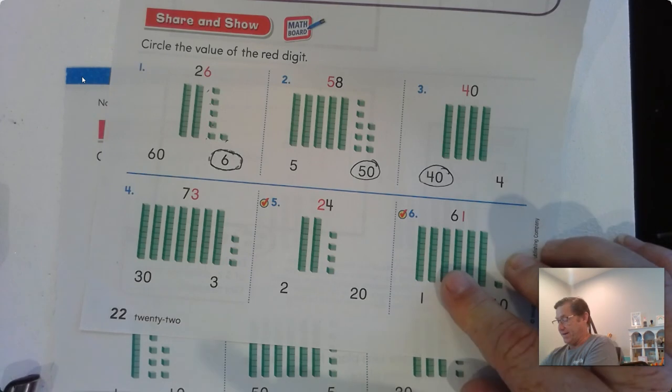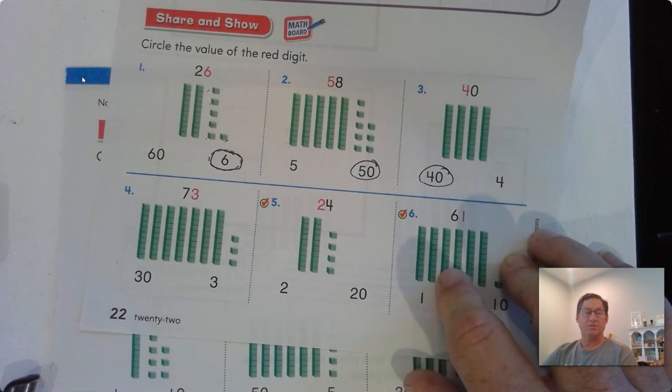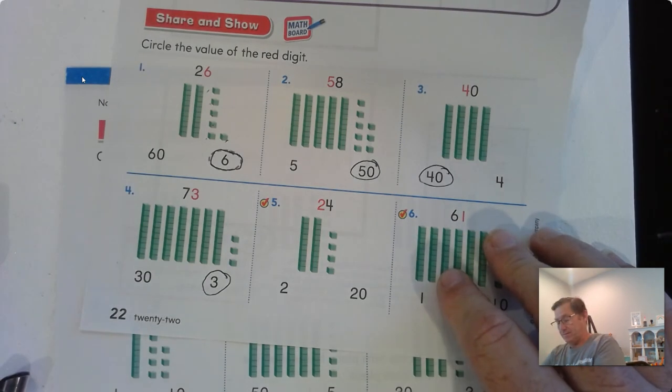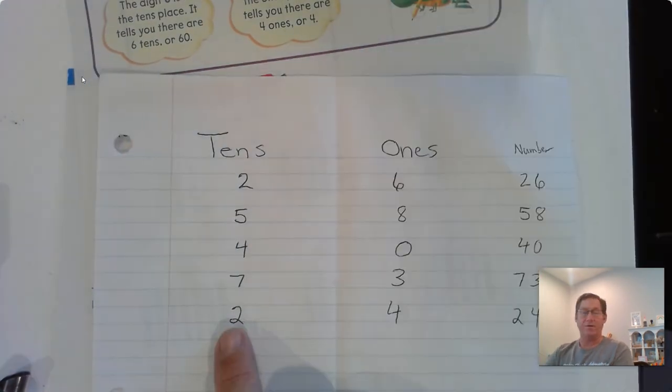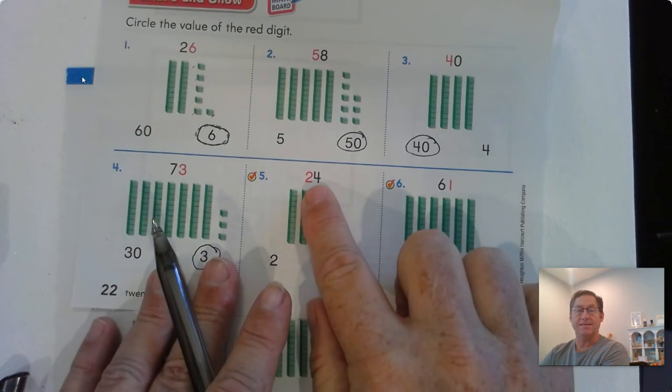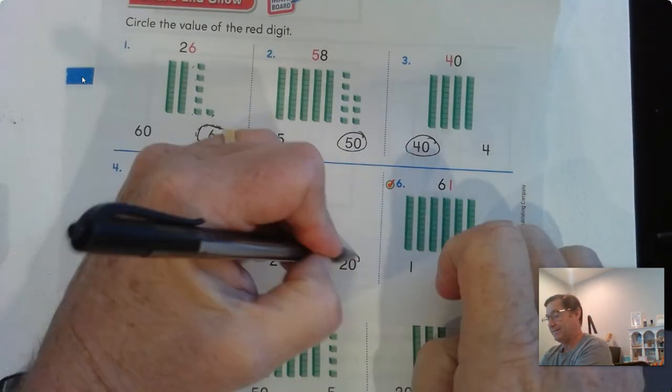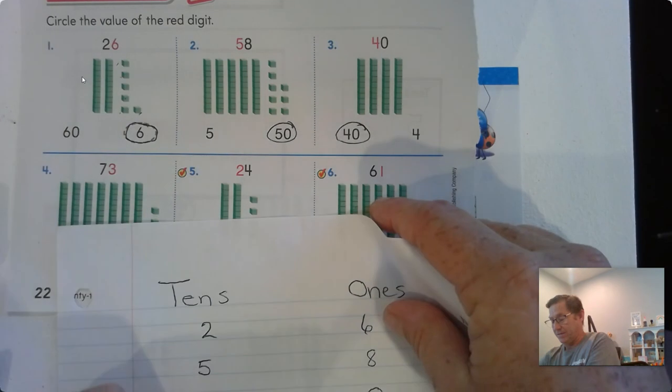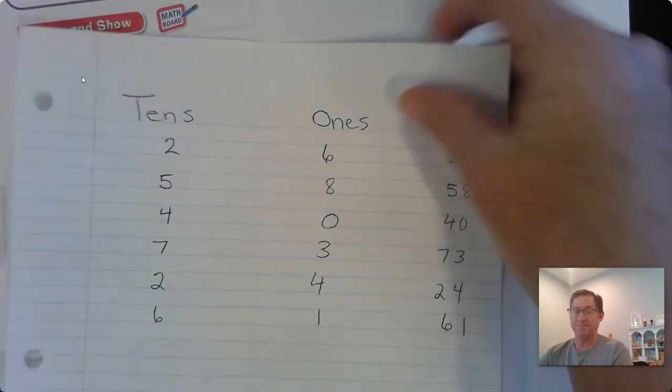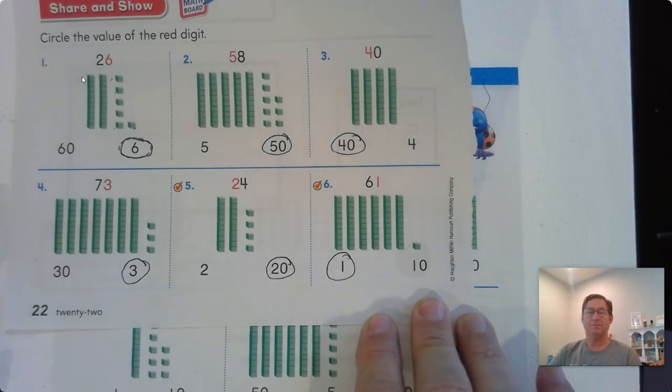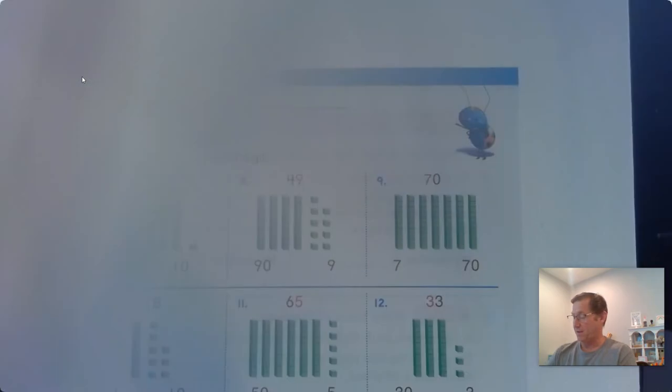Number 4: 73. The 3 represents the 3 ones. Problem 5: 24. If we write 24 on a place value chart, we have 2 tens, 4 ones. So the red digit is 2, that's 20. And then our last one, 61. 61 means we have 6 tens, 1 one. And so the 1 is in the ones place.